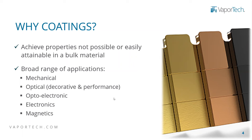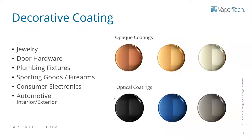In terms of decorative coatings, there's a really large number of applications such as jewelry, door hardware, plumbing, sporting goods, and so on. Within VaporTech, we like to separate those into opaque coatings and optical coatings. For the opaque coatings shown on top, those are more natural colors going all the way from a bronze or copper color down to nickel or stainless steel look. It doesn't matter the thickness of the coating — as long as you pass a certain small limit, around 100 nanometers or so, you get that color throughout.